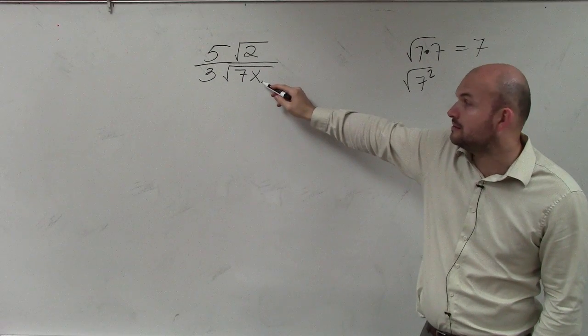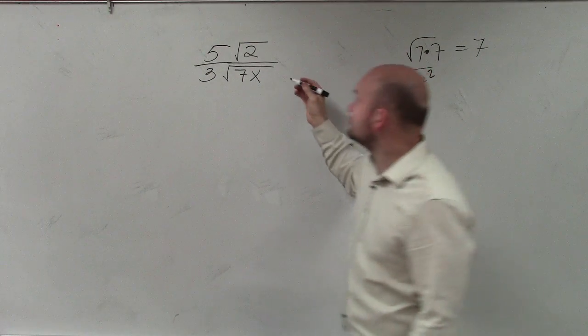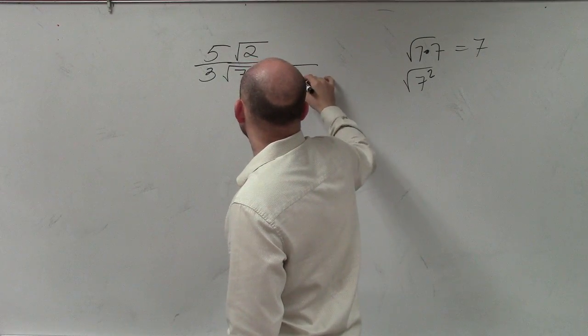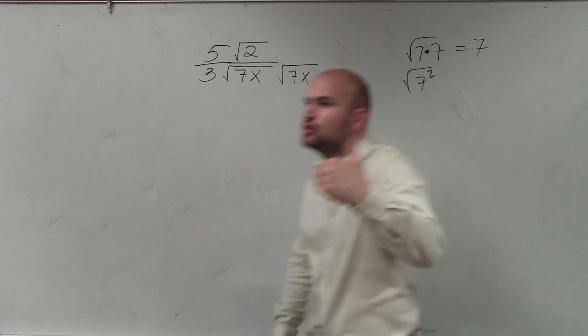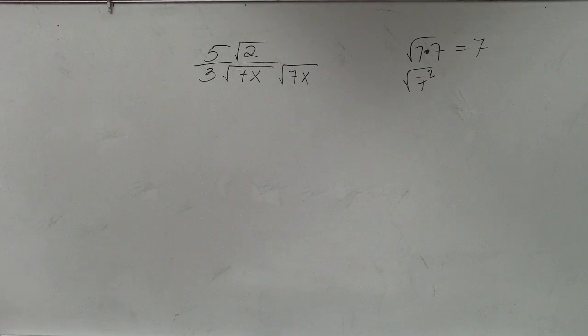And what would I need the x to be? X squared. X squared as well. So I can multiply by the square root of 7 times x. Now, why does it have to be the square root of 7 times x? The reason being is because can we multiply a number from the outside to the inside? No, right?